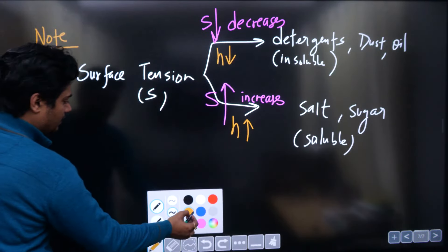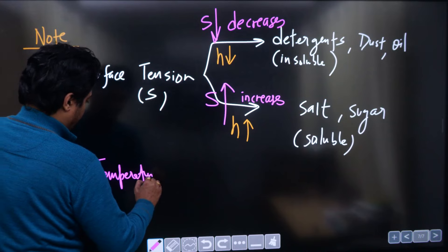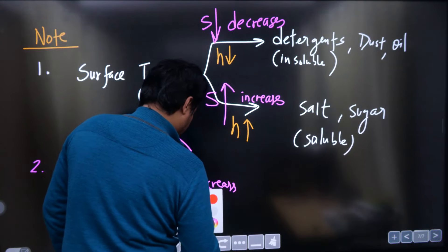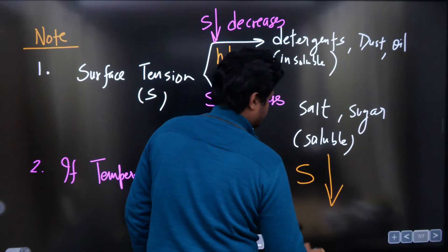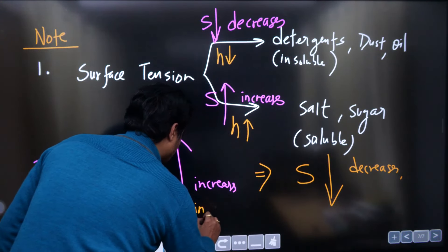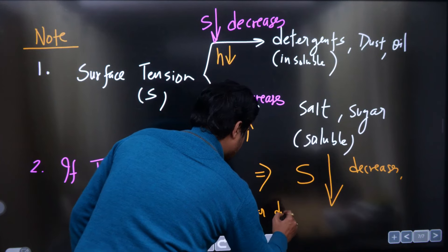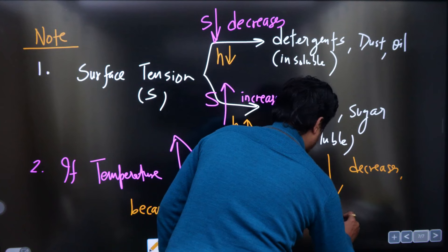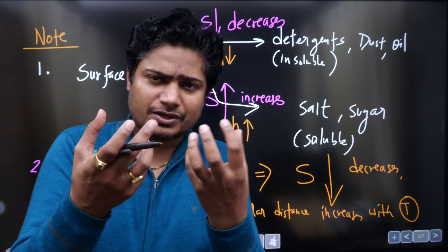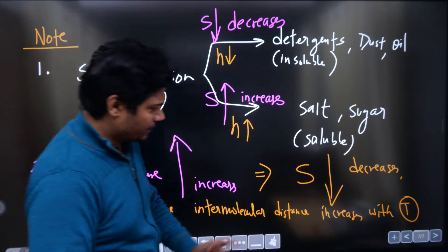The second effect is the effect of temperature. If the temperature of water increases, the surface tension decreases. This is because increasing temperature causes the intermolecular distance to increase, which reduces the cohesive force between molecules, and therefore the surface tension decreases.